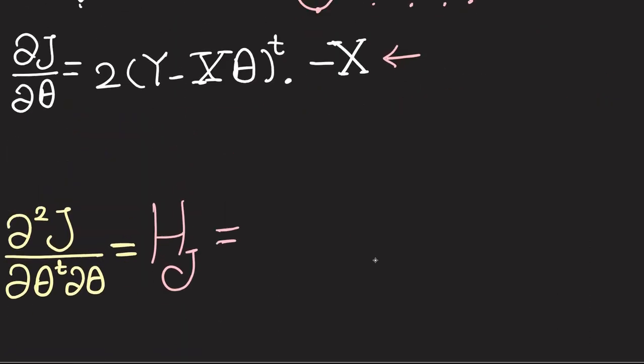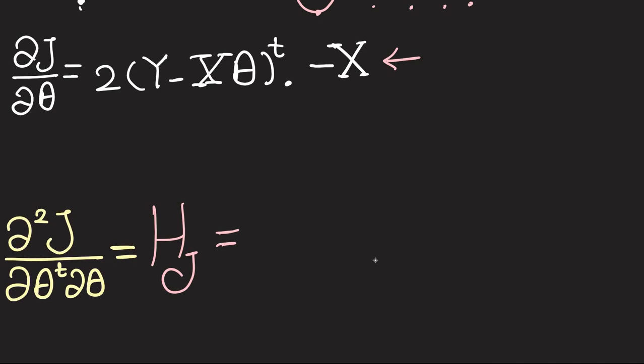So here, ∂²J/∂θ^T∂θ is basically ∂/∂θ^T of ∂J/∂θ. Our first step is going to be to simplify ∂J/∂θ and then take the partial derivative with respect to θ^T. Let me first introduce this transpose, so these are going to be θ^T X^T and this is going to be Y^T.